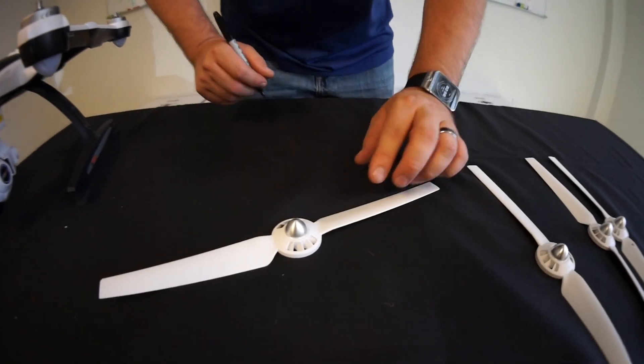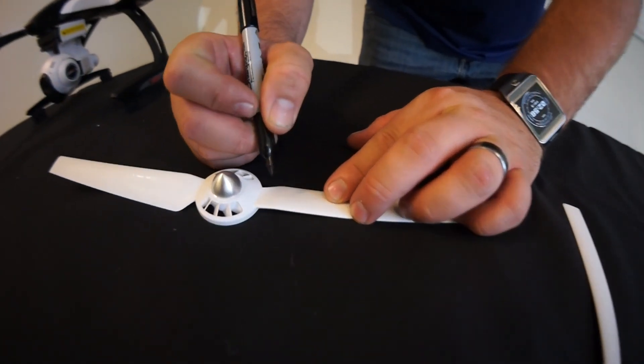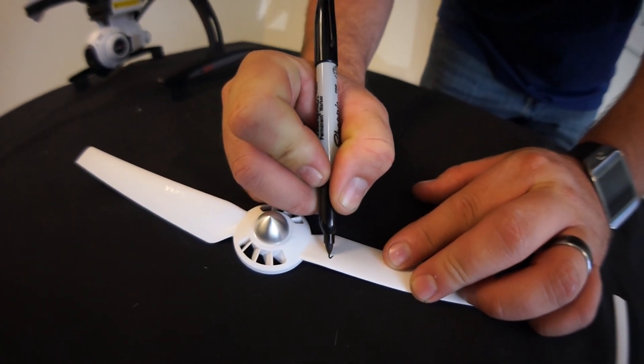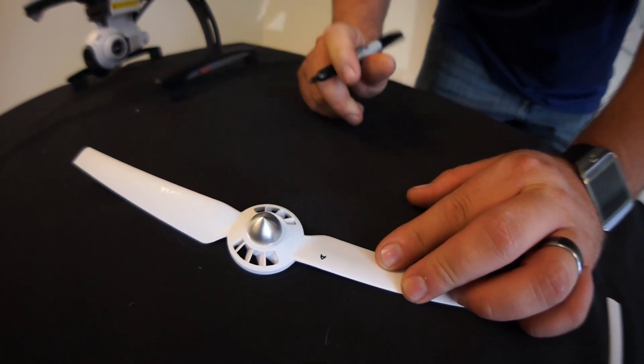Here's a little quick tip for you. Go ahead and grab a sharpie pen and you notice that the A is very hard to see. What we want to do is we're going to outline that A so we can see it for future use.